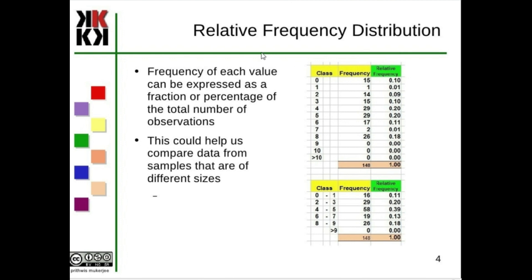Relative frequency distribution and percent: the relative frequency is the frequency out of the total. A certain frequency divided by the total gives the relative frequency. For example, zero out of the total is a percentage; the operations are about 80%. It will be 0.11, which will be 60%.